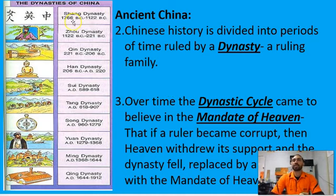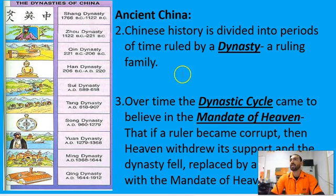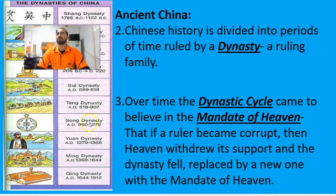The Chinese dynasties start with the mythical Shia dynasty in the prehistoric period. Then we get the Shang, the Zhou, the Qin, the Han, the Sui, the Tang, the Song, the Yuan, the Ming, and the last Chinese dynasty was the Qing, which lasted up until 1912. Chinese history is divided into periods of time ruled by a dynasty — the dynasty is the ruling family. Over time, the dynastic cycle came to believe in the mandate of heaven: that if a ruler became corrupt, heaven withdrew its support and the dynasty fell, replaced by a new one who has the mandate of heaven because they're in charge.